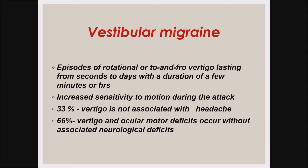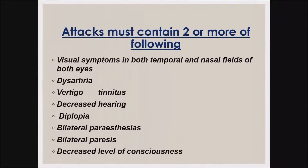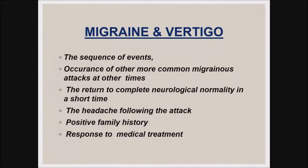Vestibular migraine is being diagnosed more frequently. Episodes of rotatory or to-and-fro vertigo last from seconds to days, with duration typically minutes to hours, and increased motion sensitivity during the attack. One third of patients have no associated headache, and two thirds may have ocular motor deficits without other neurological deficits. According to international classification, basilar migraine requires two or more of: dysarthria, vertigo, tinnitus, visual symptoms, diplopia, decreased hearing, bilateral paresthesia, bilateral paresis, or decreased level of consciousness. Diagnostic clues include occurrence of typical migraine symptoms at other times, return to complete neurological normality, headache following the attack, positive family history, and response to medical treatment.